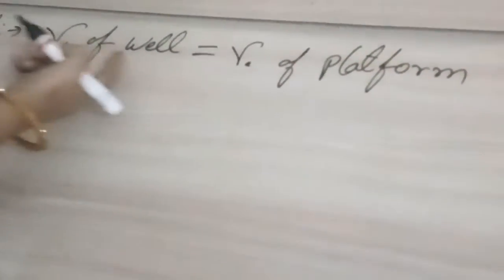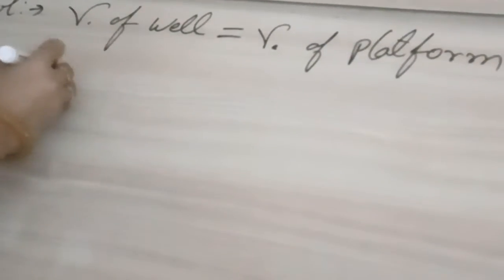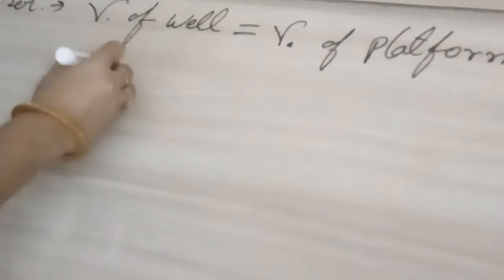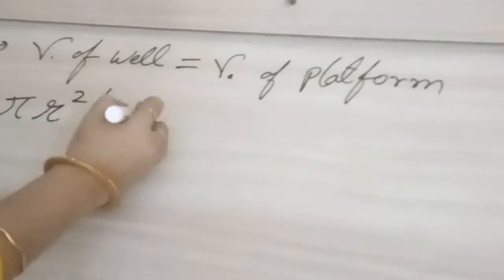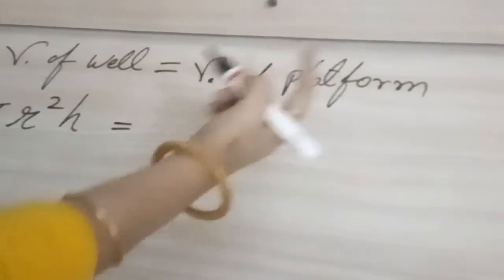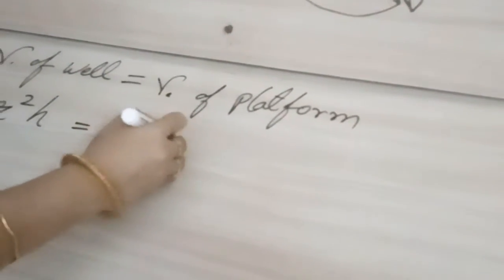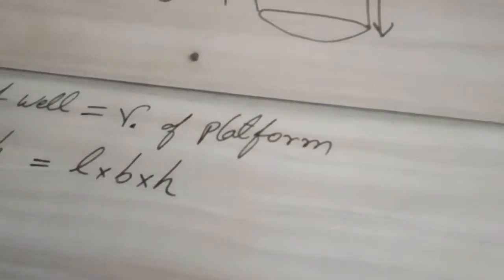We will put the formula. Since well is in shape of cylinder, so volume will be pi r square h. And since platform is in form of a cuboid, so volume will be length into breadth into height.